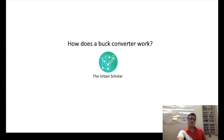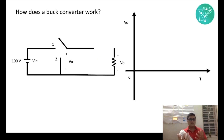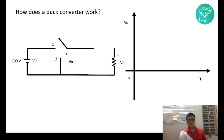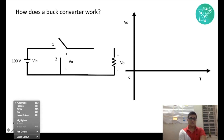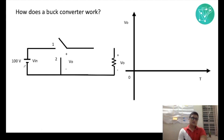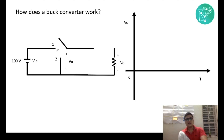Before going on to the actual representation of the buck converter, we would like to break this down into steps. The first step is to analyze the circuit. We have an input voltage of 100 volts, and we have V output which is measured across the two terminals. We also have a single pole double throw switch which can connect to two positions in the circuit.